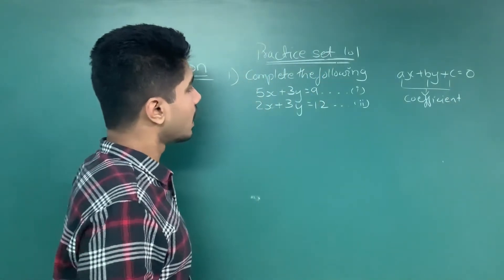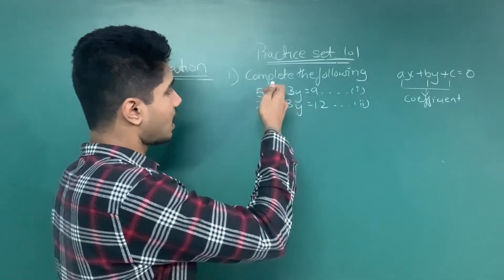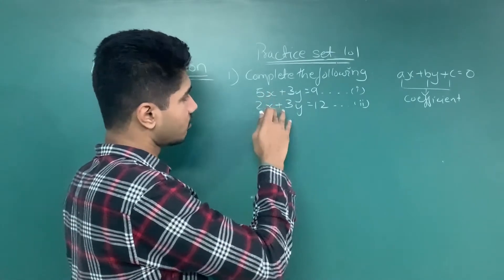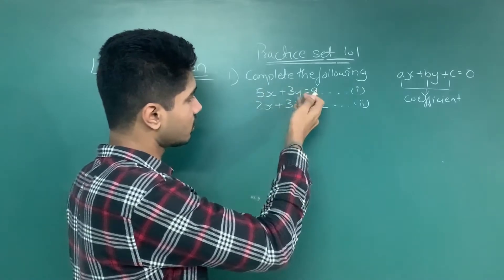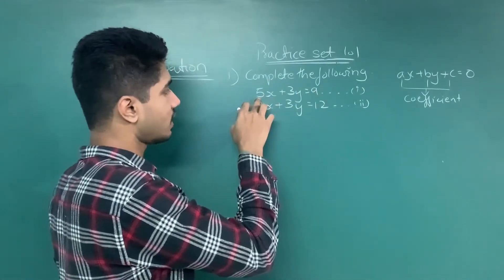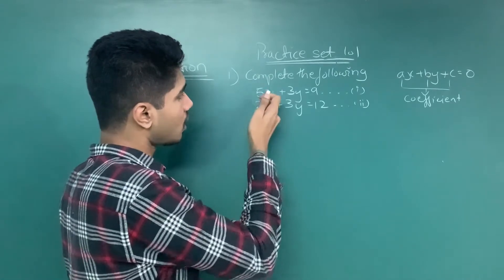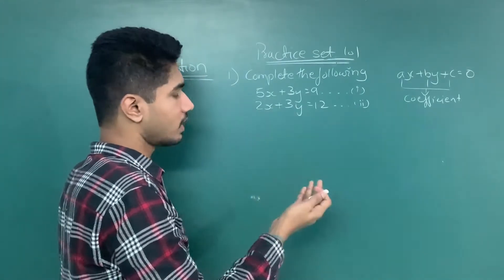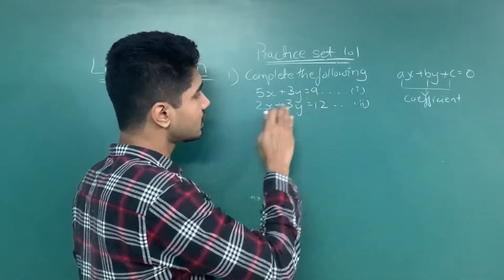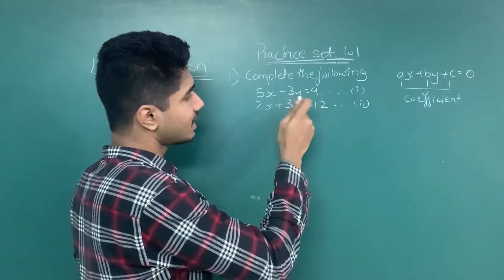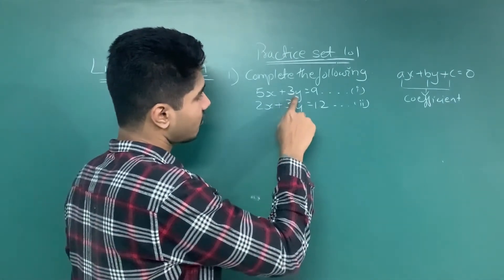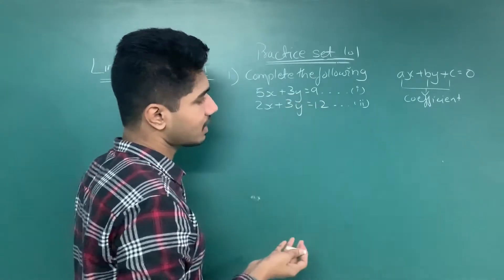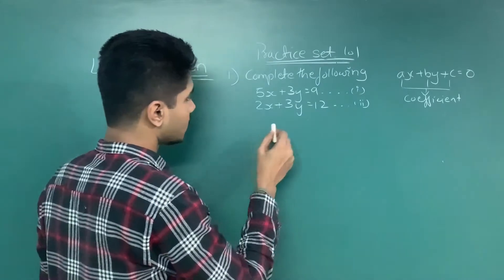How do you solve simultaneously? In the case of simultaneous equations, you either eliminate X or Y. To eliminate one of the variables, you have to make the coefficients the same. For example, if the X coefficient is 5 in one equation and 2 in another, you make them the same by multiplying or dividing throughout the equation. In this question, the Y coefficient is 3 in both equations, so you can subtract directly.